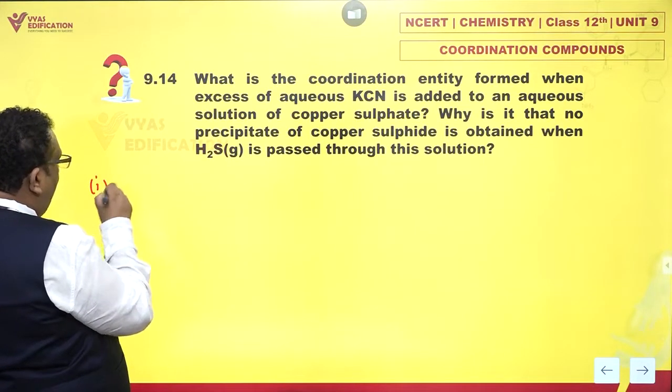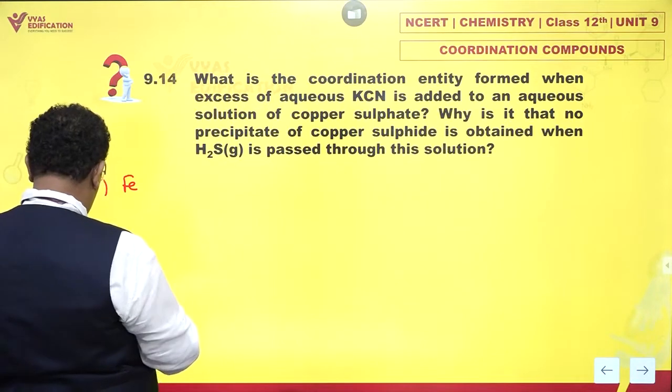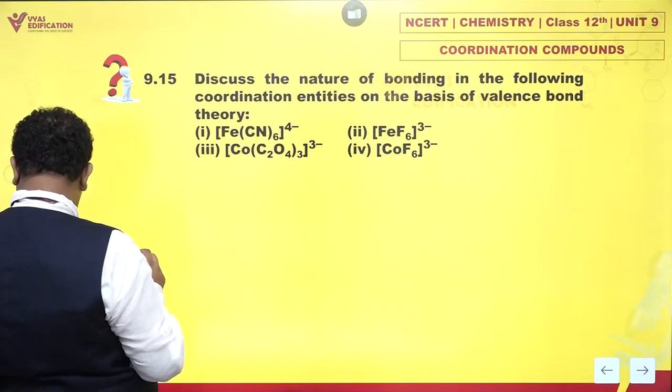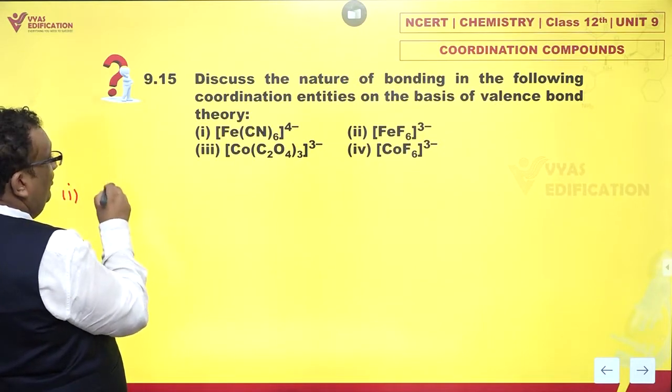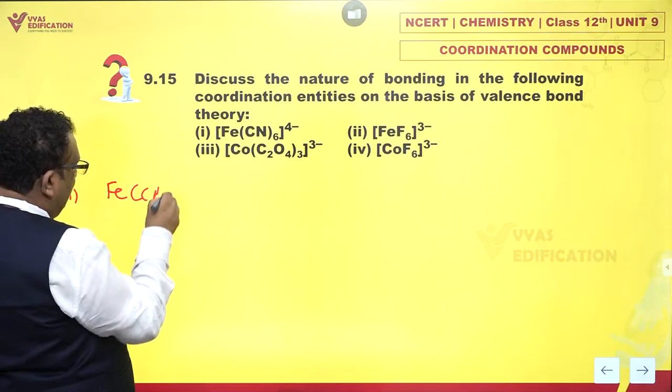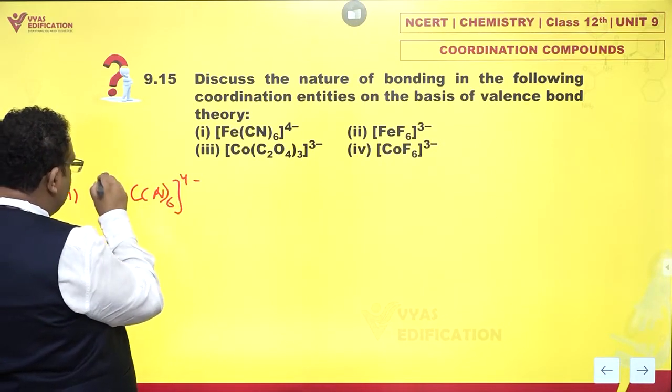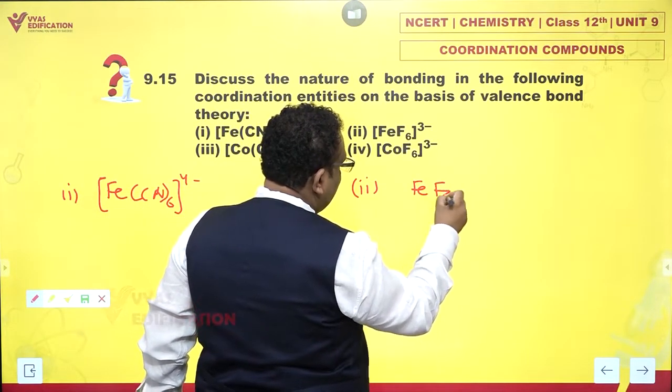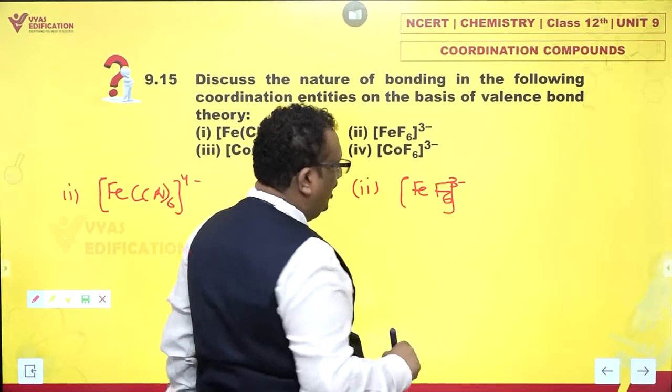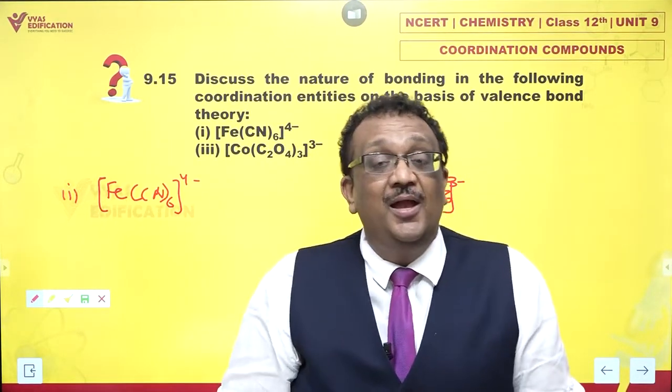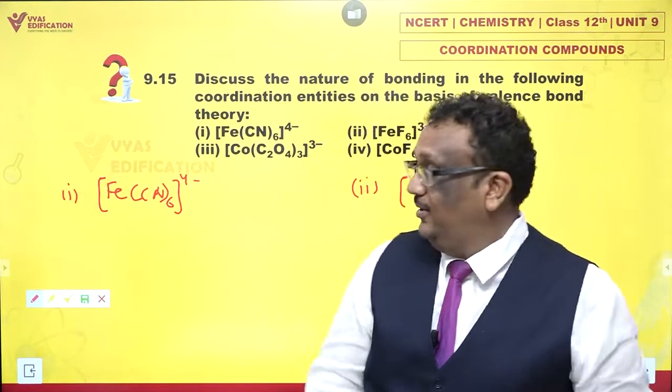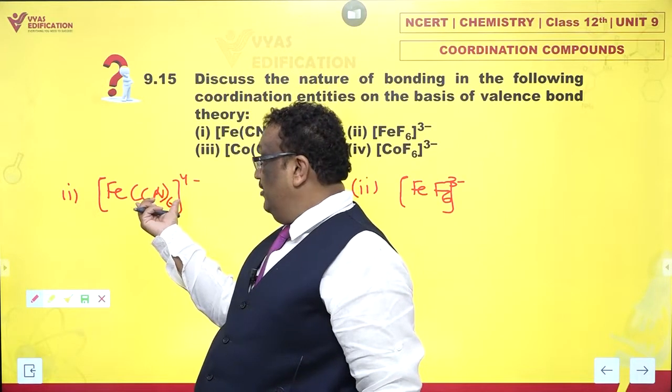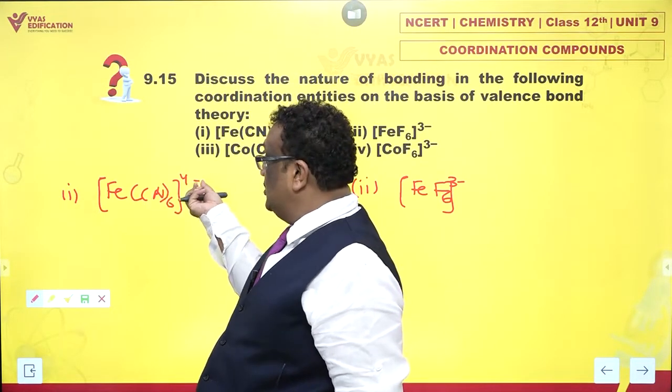First we have [Fe(CN)6]4- and at the same time the second one which is [FeF6]3-. How do we begin? Step one: isolate the metal ion. Which metal ion is there? Six cyanide ions means minus six. Although you have minus six on cyanide, the charge is only minus four. Why? Because iron must be plus two.